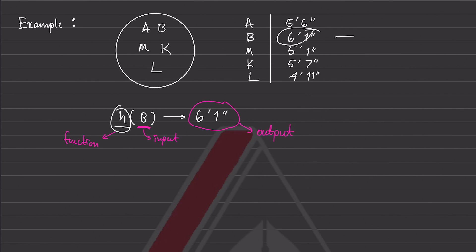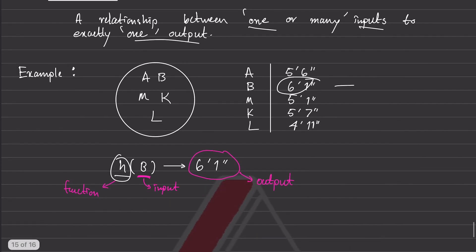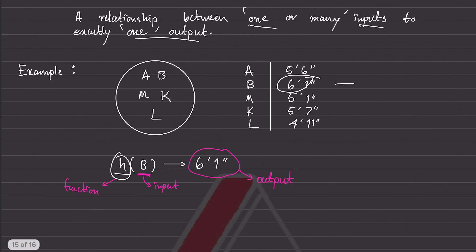Well, okay, that explains how we can have one input and then one output. Sure. But what if we have many inputs?